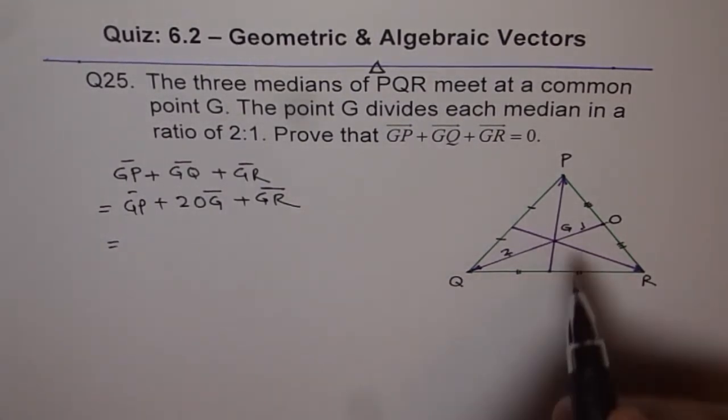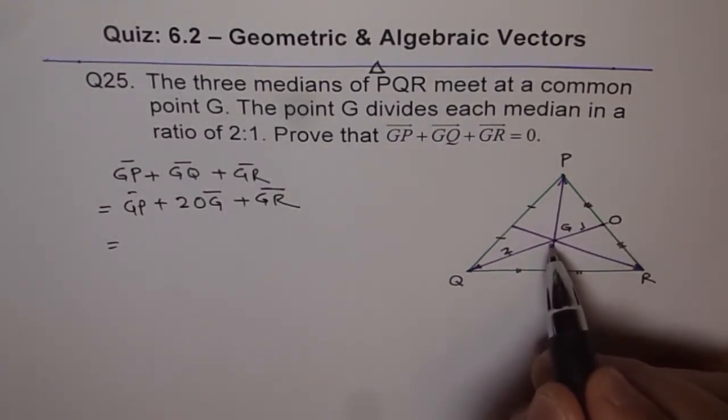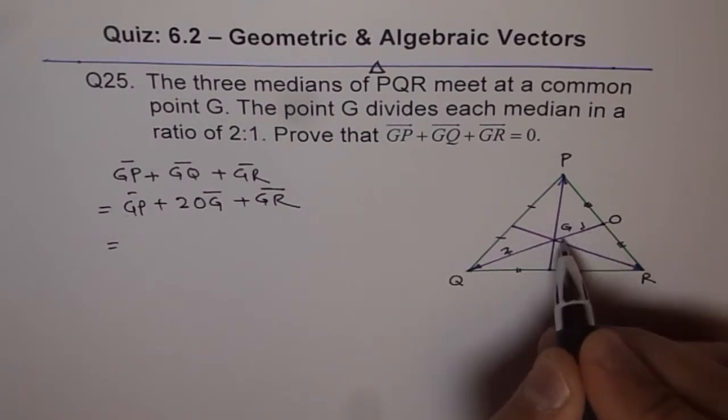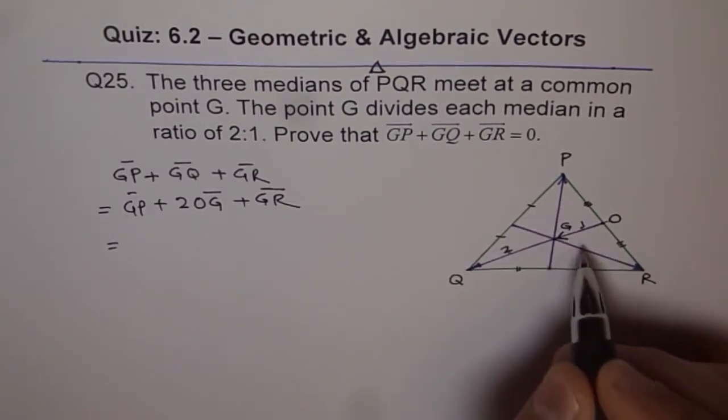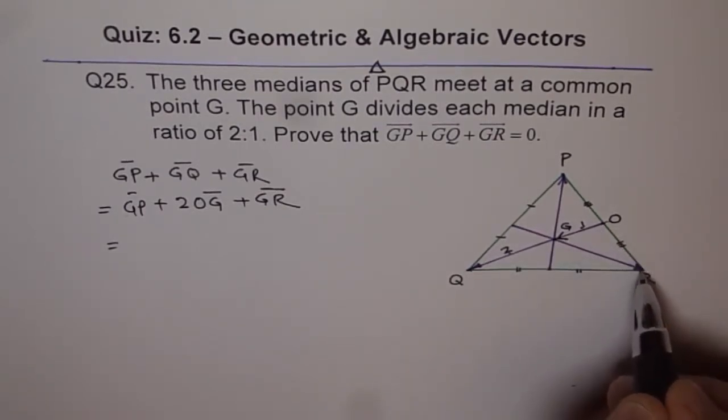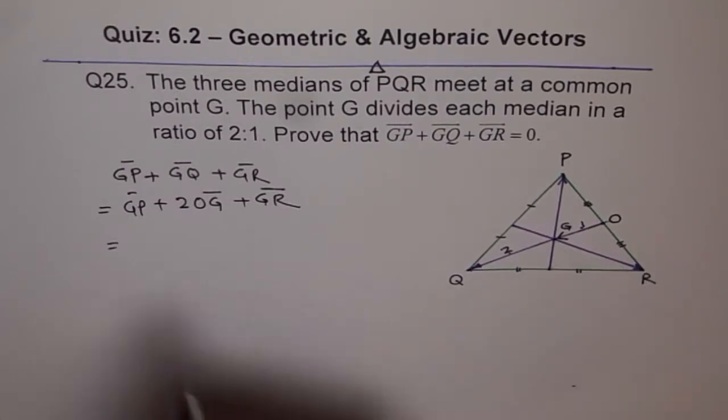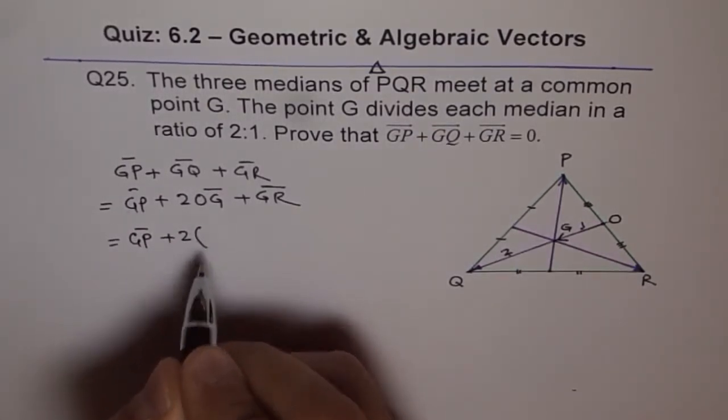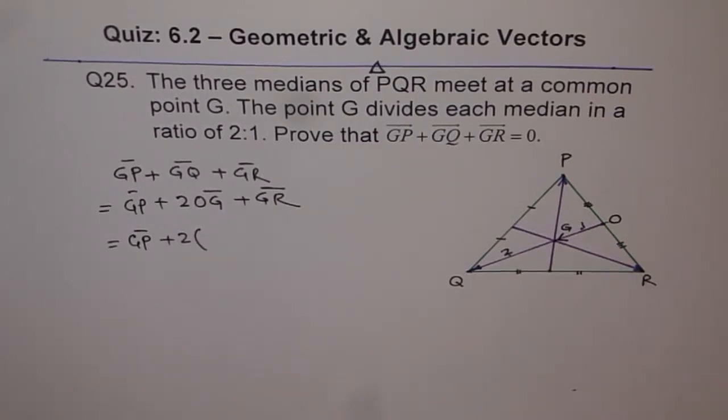Second step is OG. OG can be written as OR plus RG. OG, that means O to G, can be written as OR plus RG. So we have GP plus 2 times OG.